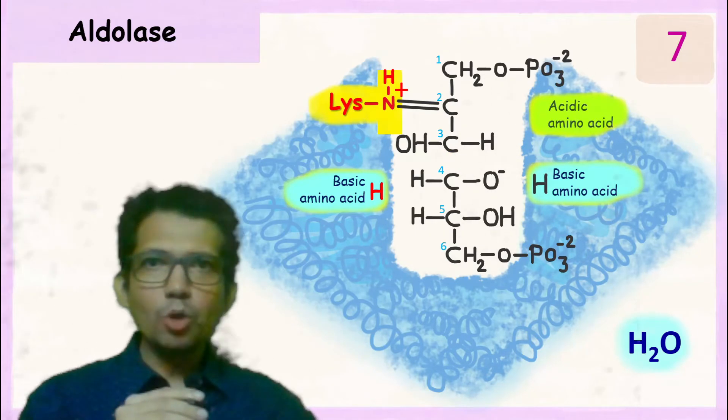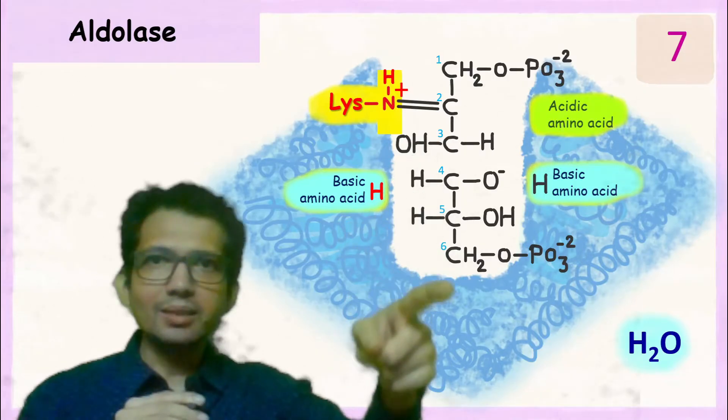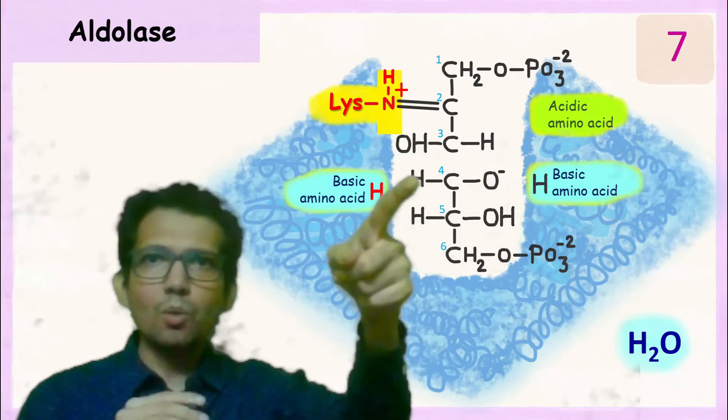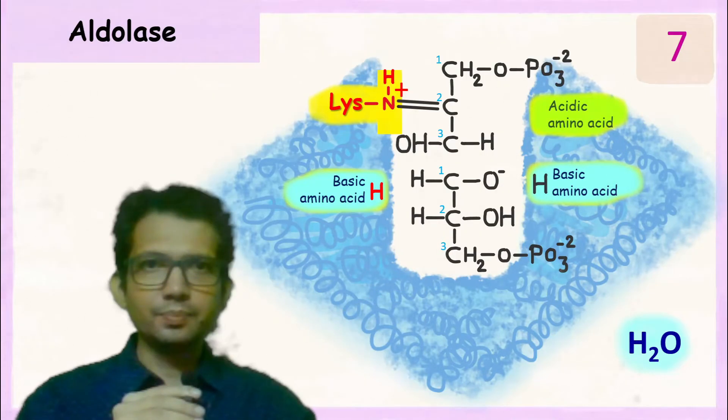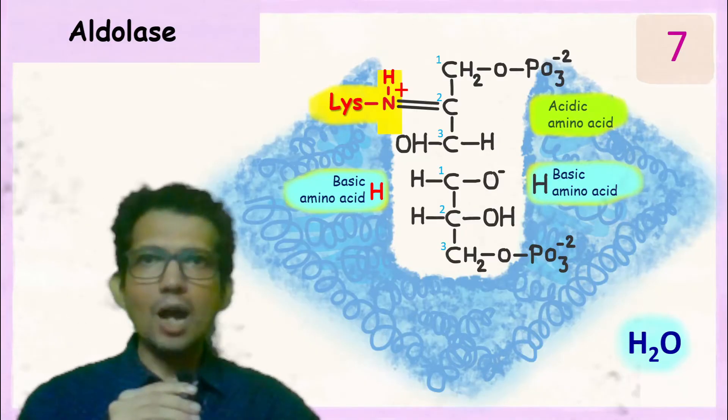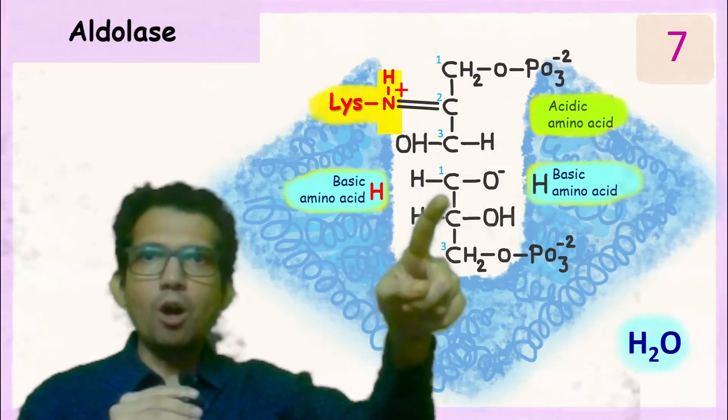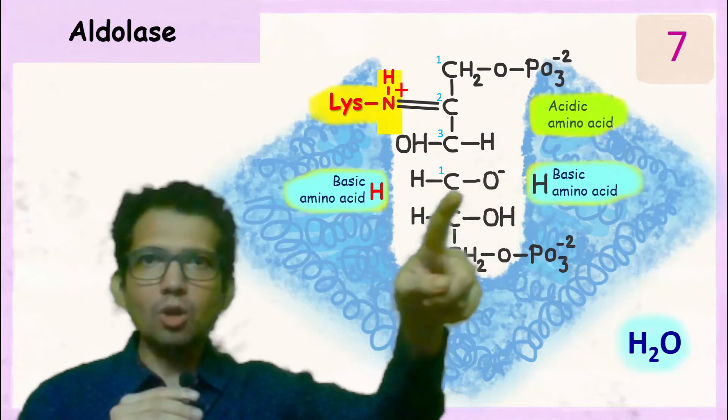As the bond is broken, we will rewrite these numbers as 1, 2 and 3. Now this carbon forms a double bond with this oxygen.